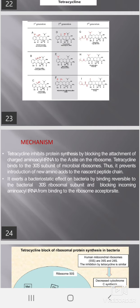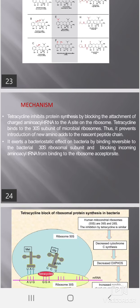Mechanism: Tetracycline inhibits protein synthesis by blocking the attachment of charged aminoacyl-tRNA to the A site on the ribosome. Tetracycline binds to the 30S subunit of microbial ribosomes, thus preventing introduction of new amino acids to the nascent peptide chain. It exerts a bacteriostatic effect on bacteria by binding reversibly to the bacterial 30S ribosomal subunit and blocking incoming aminoacyl-tRNA from binding to the ribosome acceptor site.